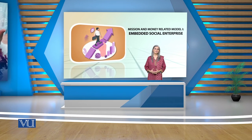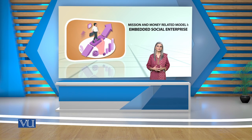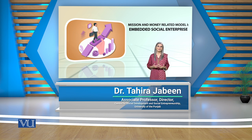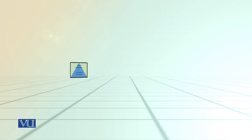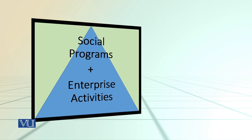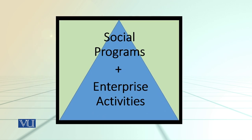As I mentioned, the social enterprise is the entity that takes a mission and an entrepreneurial activity. If there is a balance or a mix, it can be possible. The first balance is the embedded model. On the screen, you can see a diagram — there is an entity in which the social program and the entrepreneurial activities are combined.